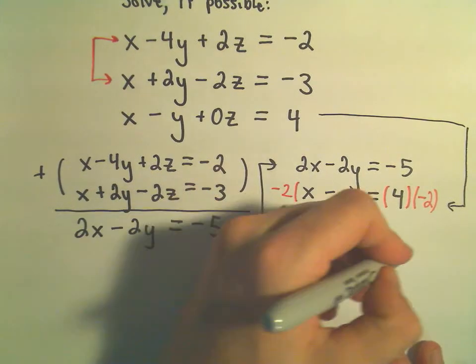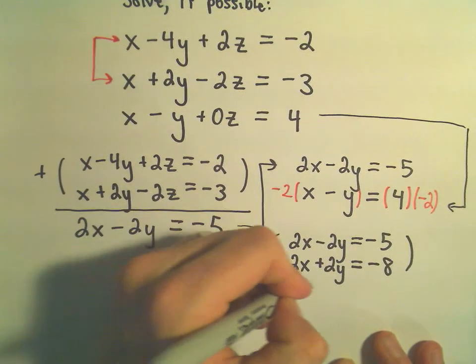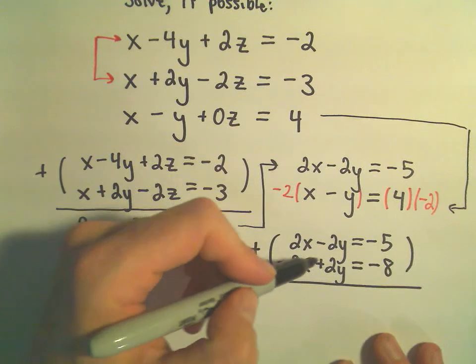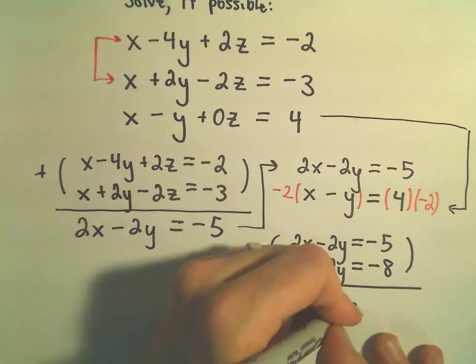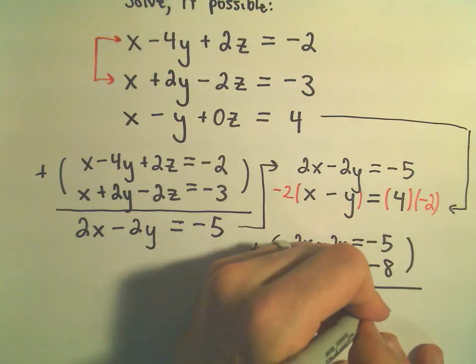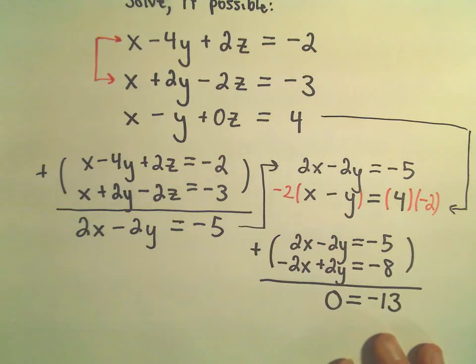And if we add these together now, we get 0x. We'll get 0y. So, we're left with 0 on the left side. We have negative 5 plus negative 8, which is negative 13. Again, we're at this place where clearly 0 doesn't equal negative 13.